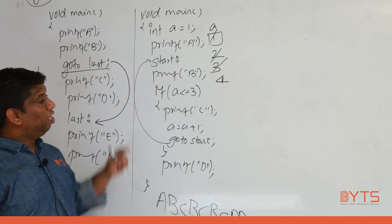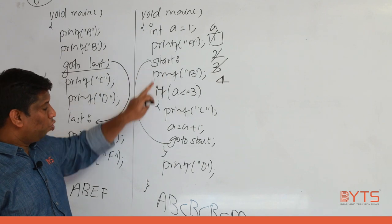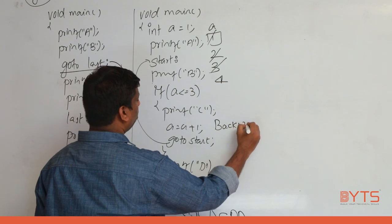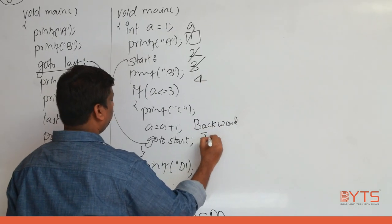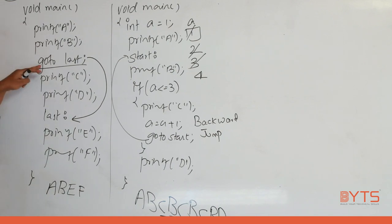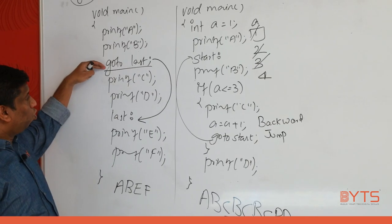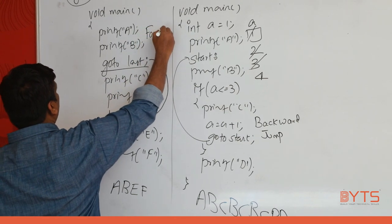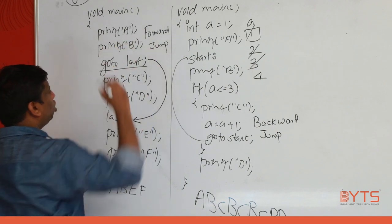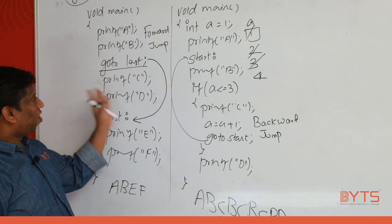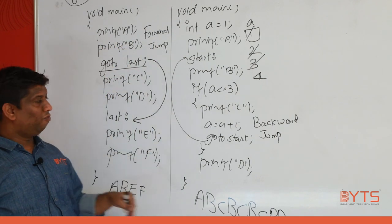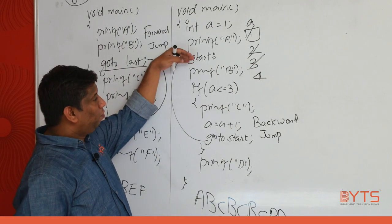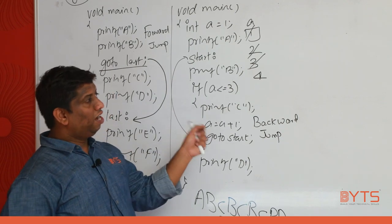Notice that B and C are printed three times without any loop. Who is making you go back? The goto statement. When the label is above and goto is below, this is called a backward jump. When goto is above and the label is below, it is called a forward jump. So there are two types of jumps: forward jump and backward jump.